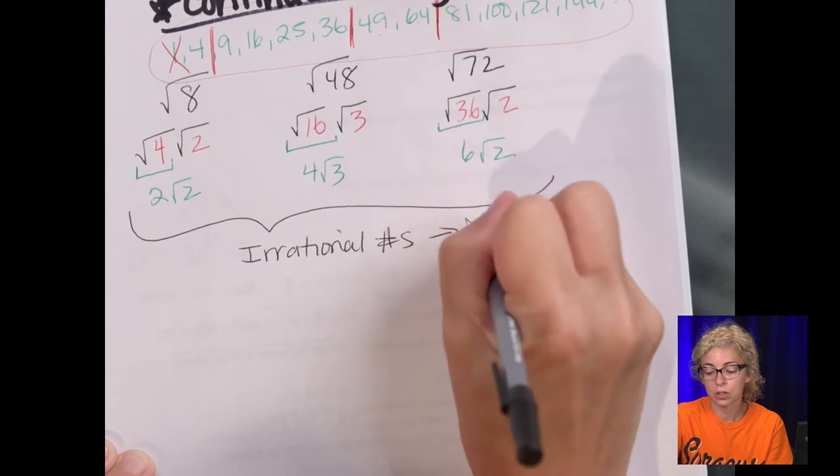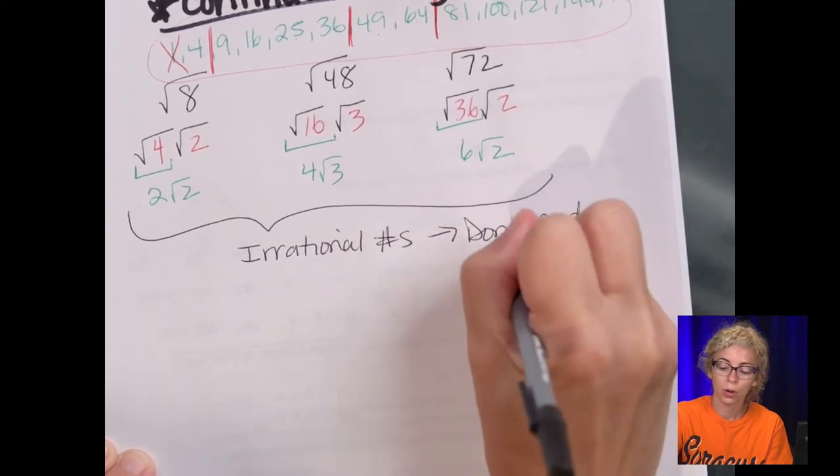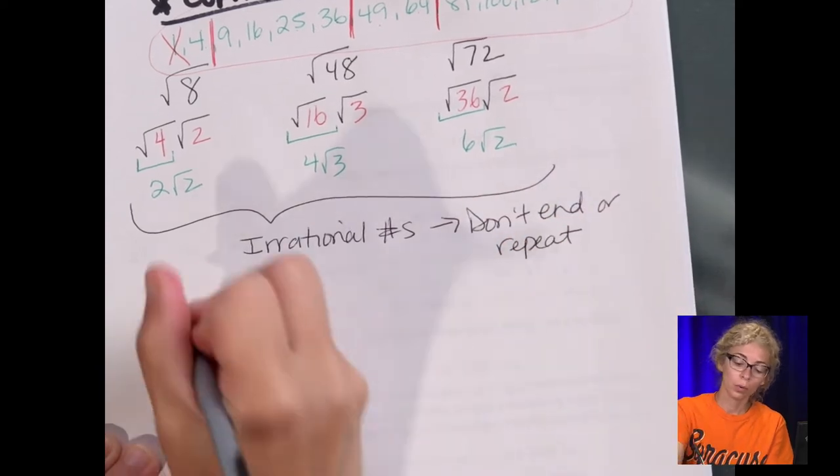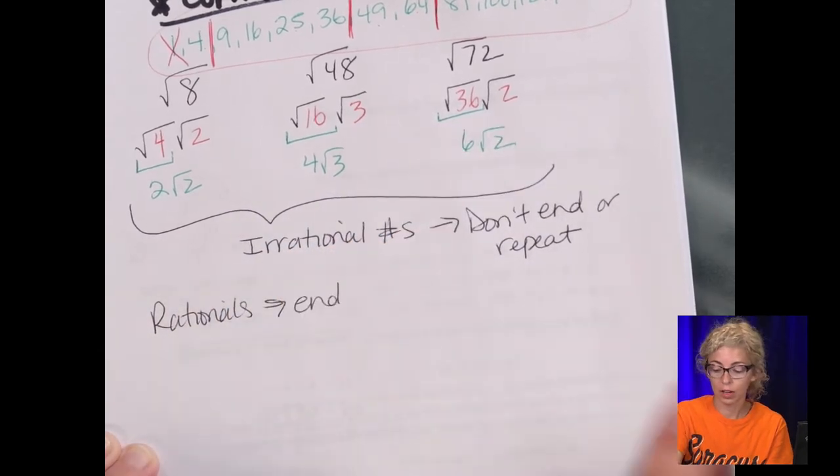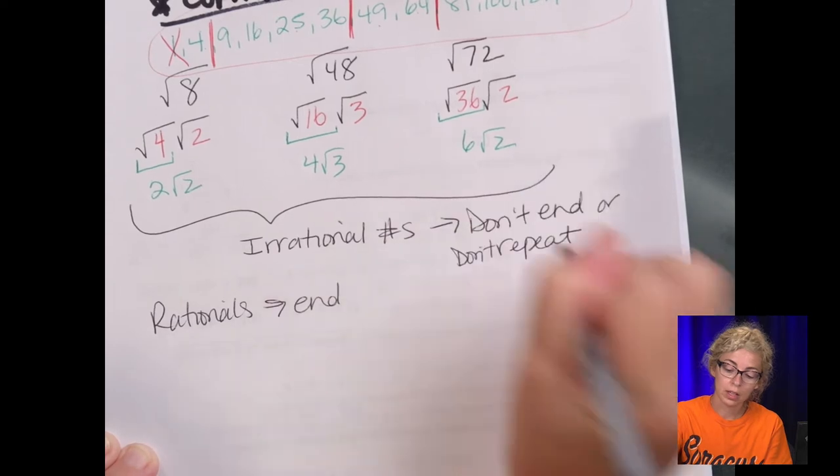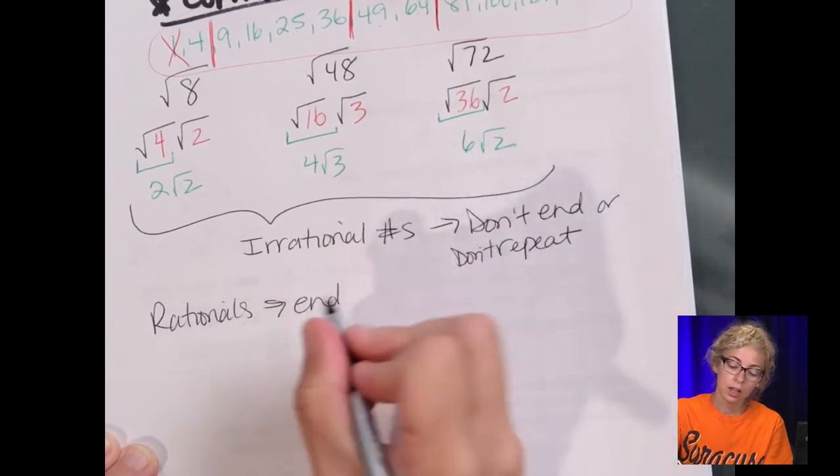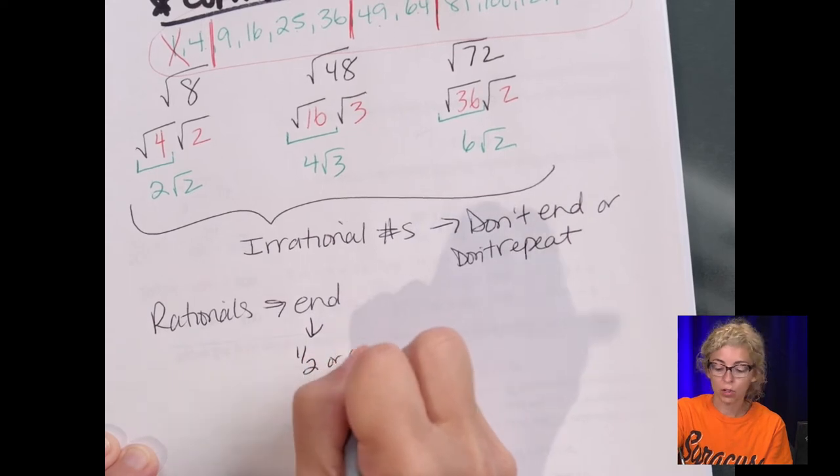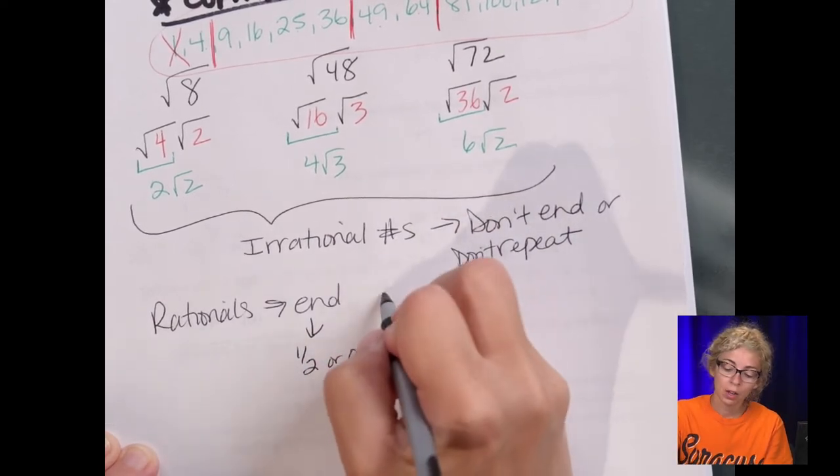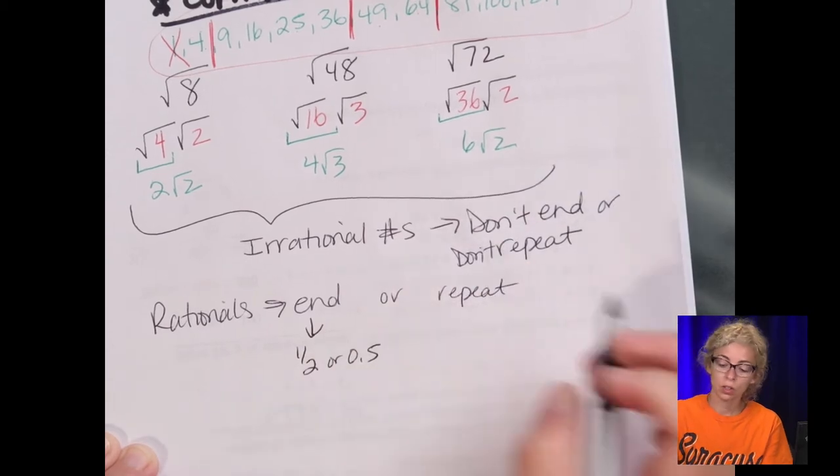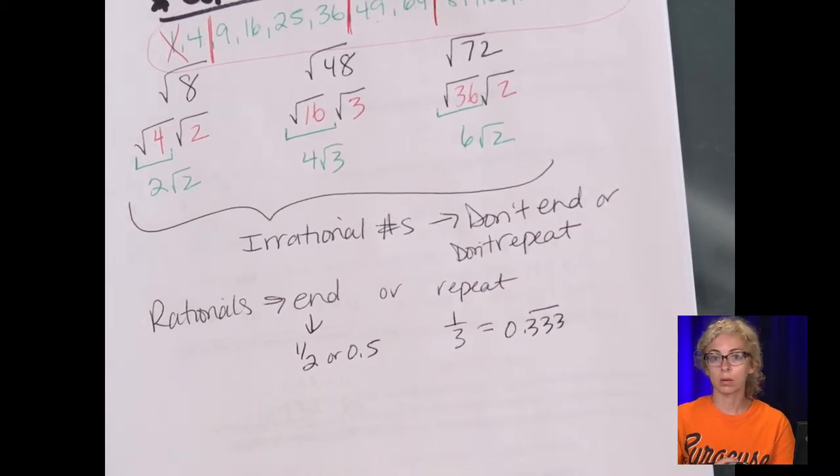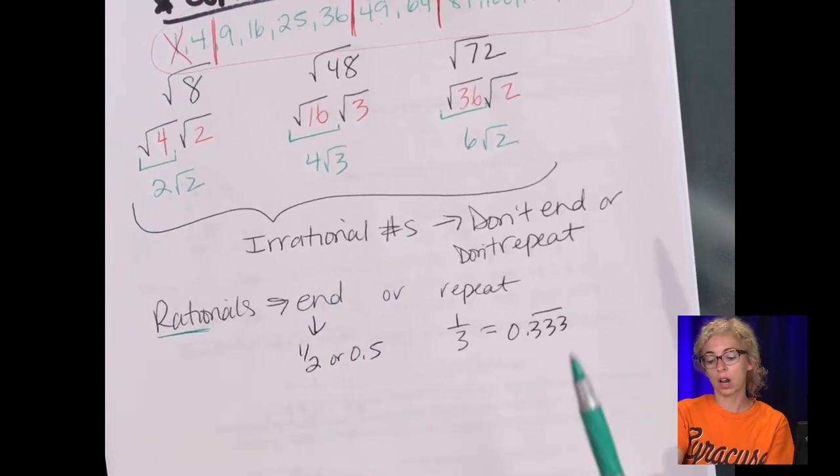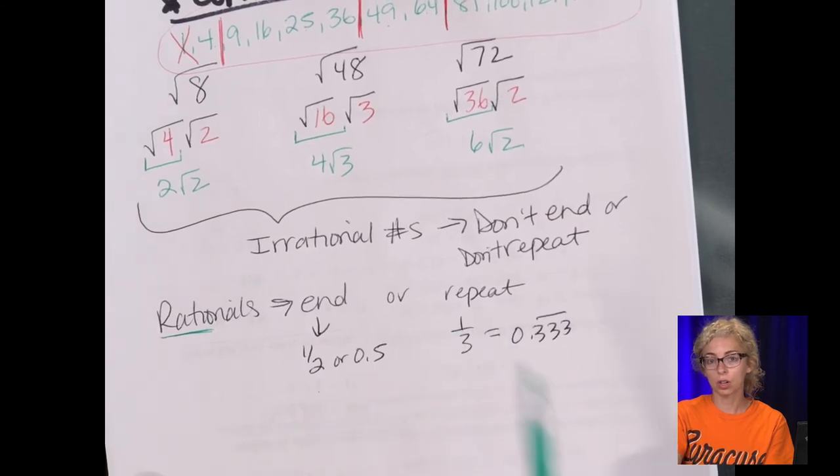So irrationals don't end or repeat. Where rational, they end, okay? So they either end. An example would be like one-half or 0.5 is a decimal. Or they repeat. So like one-third is 0.333333333, so that is a repeating decimal. The root word of ratio means a fraction. So this is a 1 to 2 ratio, 1 to 3 ratio.